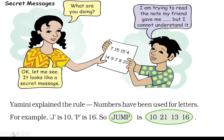Look here — this girl is saying 'what are you doing?' and this boy is saying 'I am trying to read the note my friend gave me, but I cannot understand it.' The girl says, 'Let me see — it looks like a secret message.' Yamini explained the rule: numbers have been used in place of letters.